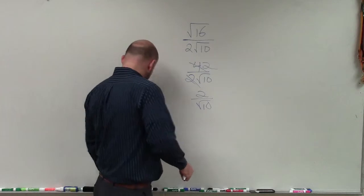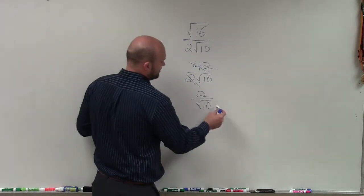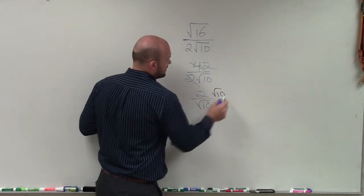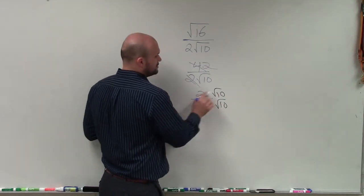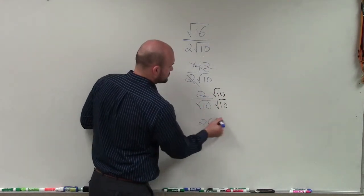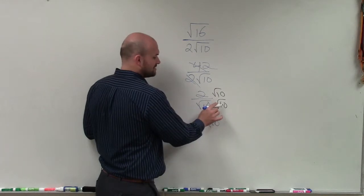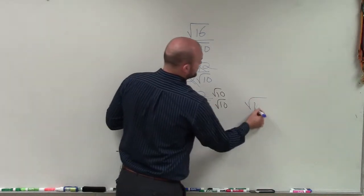So now, to rationalize the denominator, I'm going to multiply by the square root of 10 on the top and on the bottom. 2 times square root of 10 is just 2 square root of 10. And square root of 10 times square root of 10 equals the square root of 10 squared.